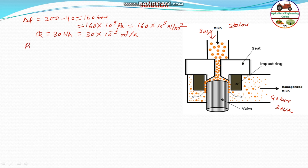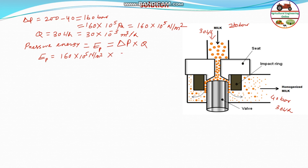Next, find the pressure energy converted. Change in pressure energy, E_P, equals change in pressure multiplied by the flow rate (discharge). So E_P equals 160 into 10 to the power 5 Newton per meter squared, multiplied by 30 into 10 to the power minus 3 cubic meters per hour, which gives 4.8 into 10 to the power 5 joules per hour.